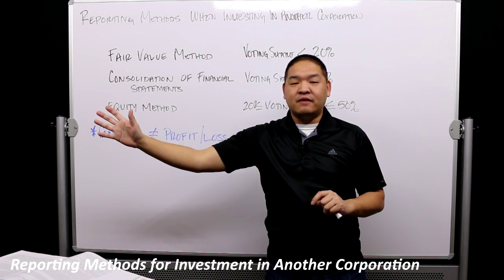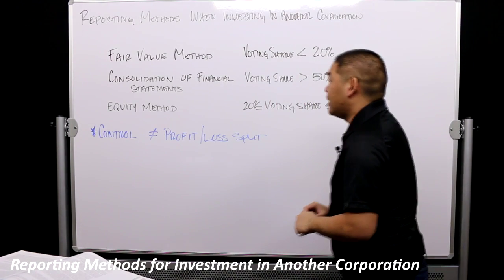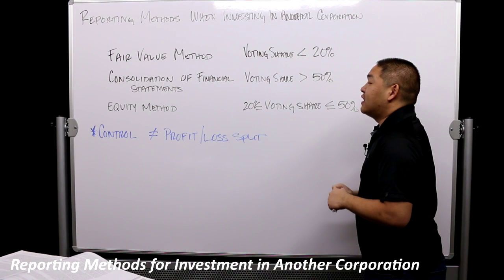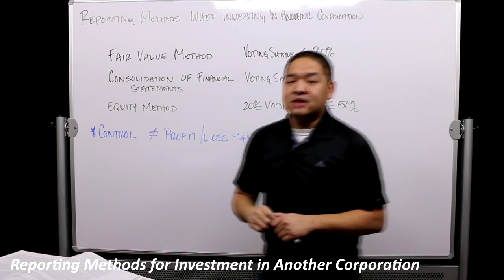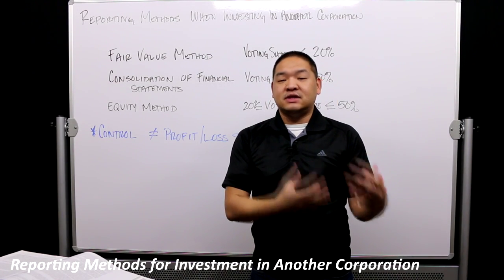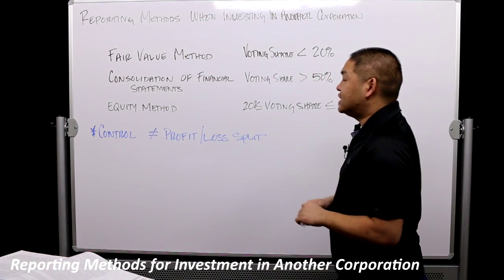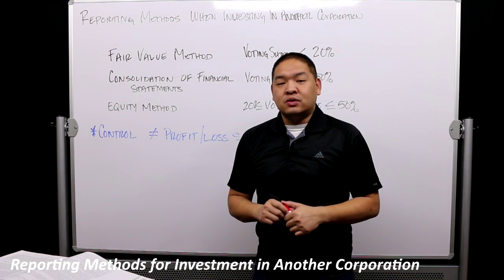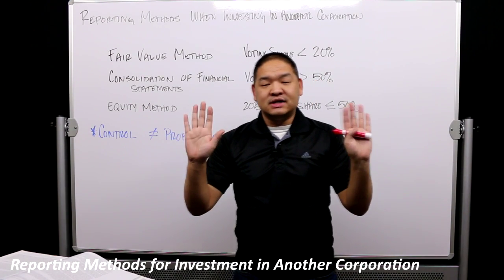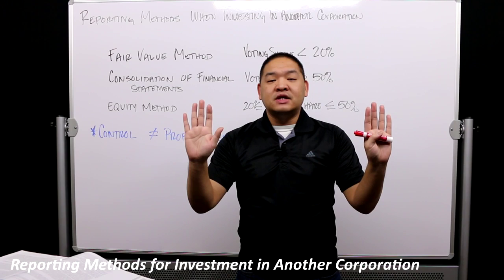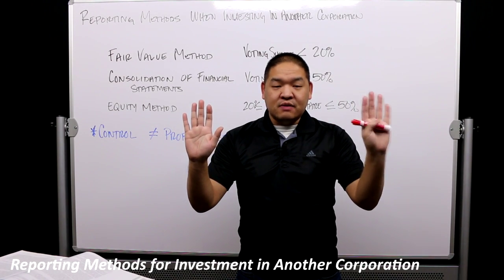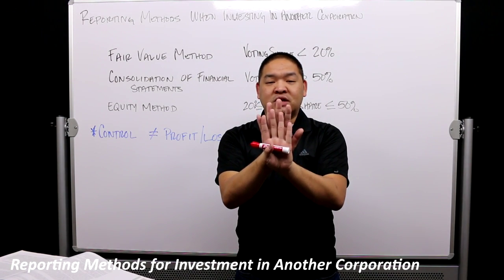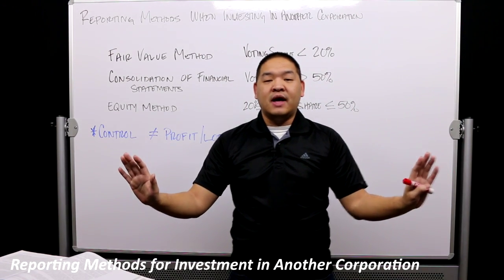On the other side of the spectrum we have consolidations. Consolidations are typically used when the investor has more than 50% of the voting rights, meaning they have control over the investee. Consolidation means we take the financial statements from the investee and merge them in with the investor, resulting in one combined set of financial statements for two organizations.